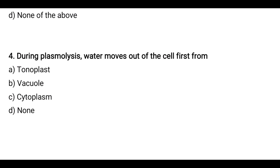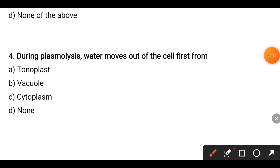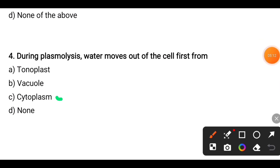Next question: During plasmolysis, water moves out of the cell first from — options are tonoplast, vacuole, cytoplasm, or none. The answer is cytoplasm. Water first leaves from the cytoplasm and then from the vacuole.